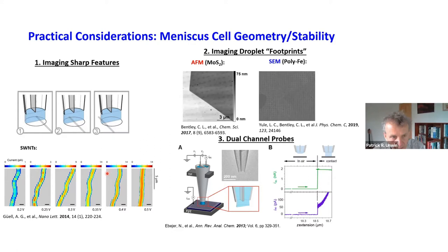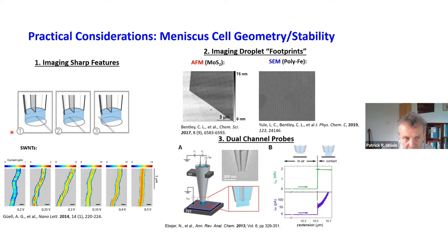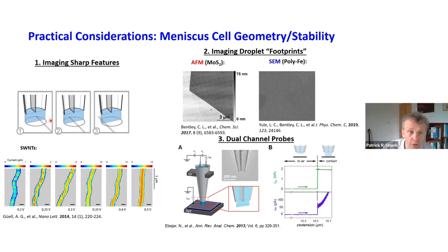With the dual probe, we did early measurements where we had a very fine conducting element — a single-wall carbon nanotube, just one nanometer in size. As well as visualizing the nanotube's activity, this is essentially a meniscus size reader: when we move the meniscus over the surface, the current switches on when the front edge of the meniscus encounters the nanotube, and switches off when the droplet leaves it. A really beautiful way to size the meniscus.